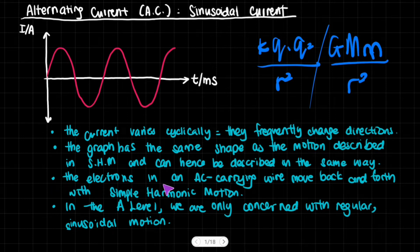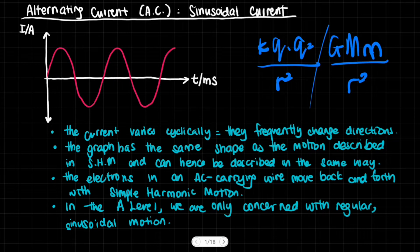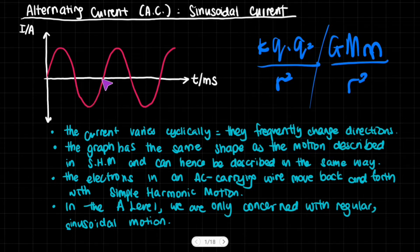The electrons in an alternating-current-carrying wire move back and forth with simple harmonic motion. You can think of the current graph as a velocity graph of an electron, because current is the rate of flow of charge. It starts at zero, accelerates towards a peak, goes down, changes direction after a momentary stop, becomes very fast, then slows down again.